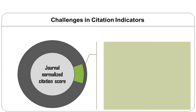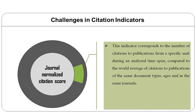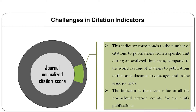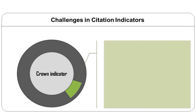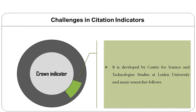The third category of indicators is journal indicators. Under this category we have journal normalized citation score, which corresponds to the number of citations to publications from a specific unit during an analyzed time span compared to the world average of citations to publications of the same types, ages, and in the same journal. The number of citations to each publication is normalized by dividing it by the world average of citations to publications of the same document type published in the same year in the same journal. The indicator is the mean value of all normalized citation counts. The Centre for Science and Technology Studies has also developed crown indicators.